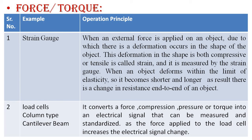The next parameter is force and torque, which involves stress and strain applied to any object or material. We require different sensors such as the strain gauge, load cells, column-type load cells, and cantilever beam. Starting with the strain gauge: when an external force is applied to an object, deformation occurs in its shape. This deformation — whether compressive or tensile — is called strain, and it is measured by the strain gauge.